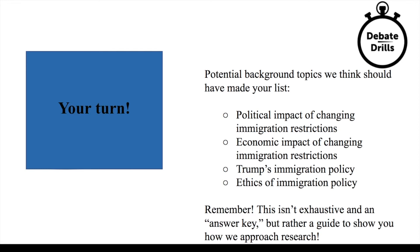Second, you may have seen ideas about the economic impact of changing immigration restrictions — some people say increased immigration will hurt the economy, others say it will help. Third, you probably looked at recent events related to the topic, such as Trump's immigration policy, including the travel ban or immigration detention centers. Fourth, you probably saw arguments about how certain immigration restrictions are unethical and how we should remove them — an important debate that lots of authors discuss.